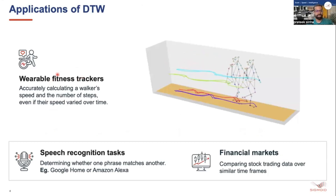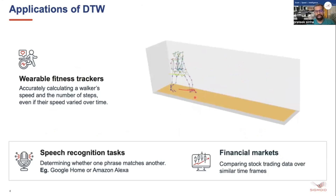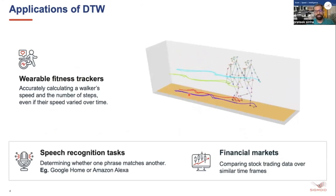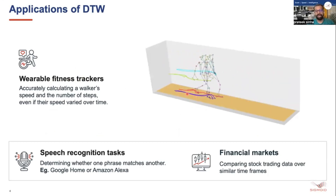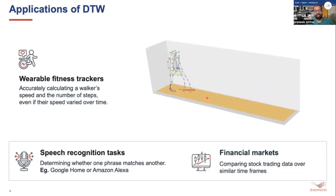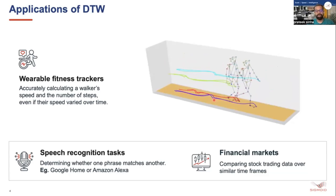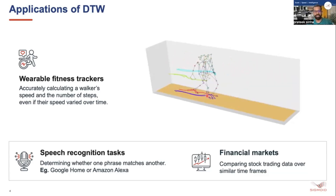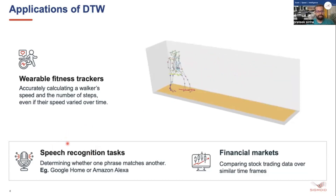Such scenarios are seen in several other places, like wearable fitness trackers where DTW can be used. For example, for a person walking at different speeds, we need to calculate the number of steps from the time series by identifying the troughs and peaks. Since they are not aligned with respect to one another, we use DTW to shift and match the peaks and calculate the steps. Similarly, DTW is used in speech recognition tasks and financial markets.